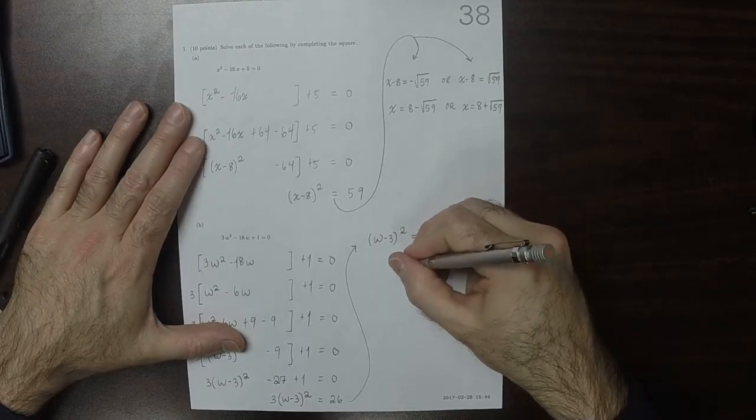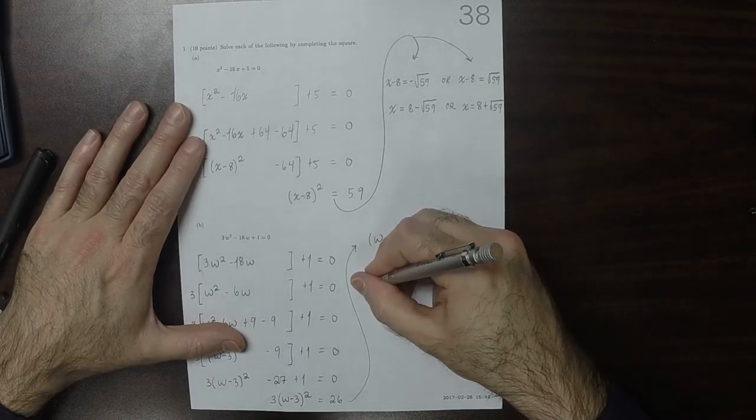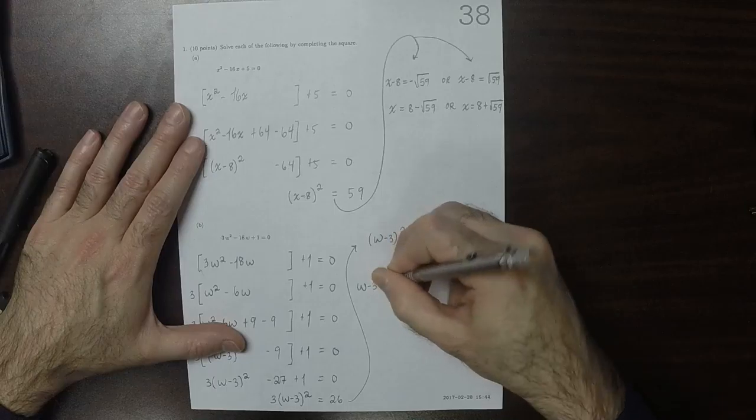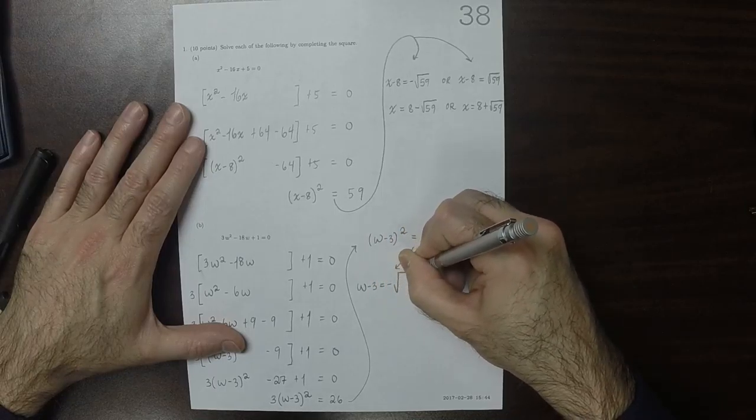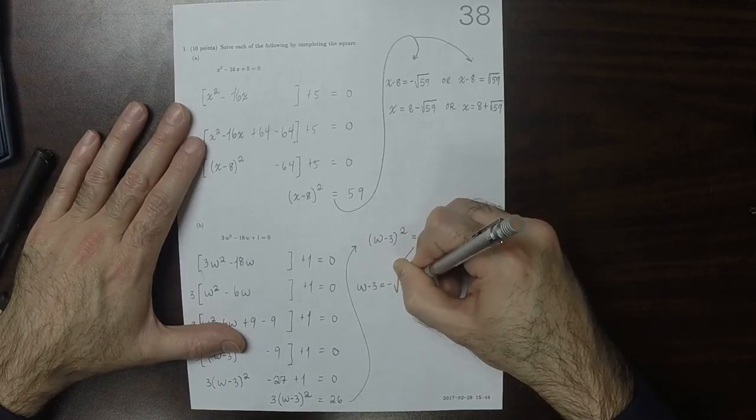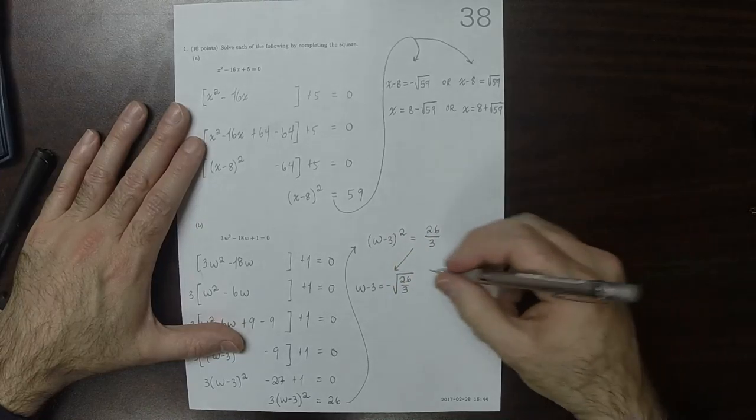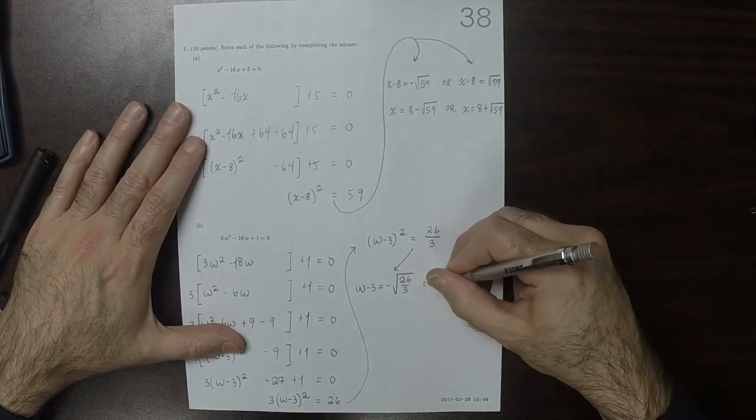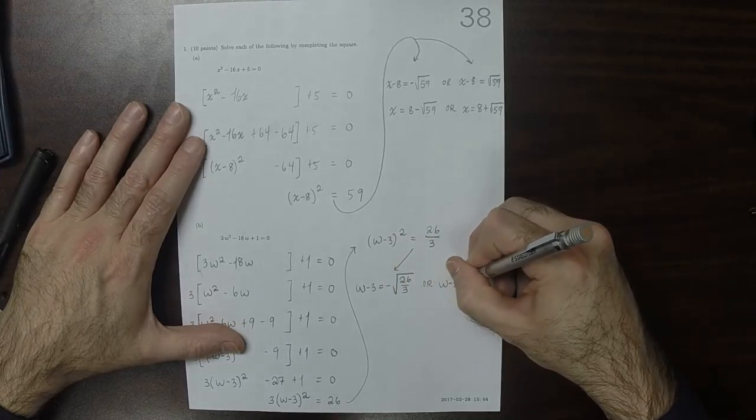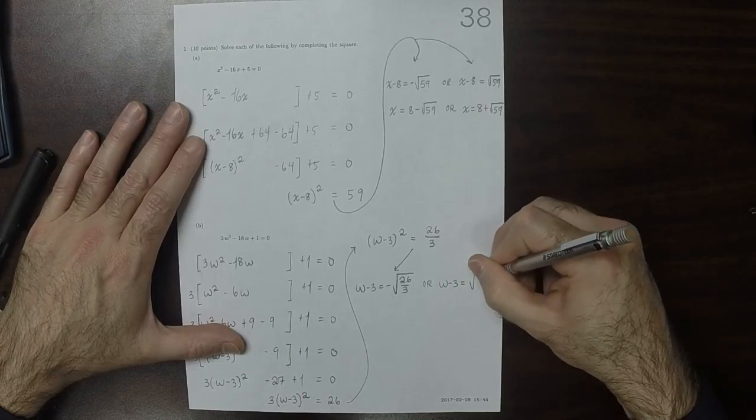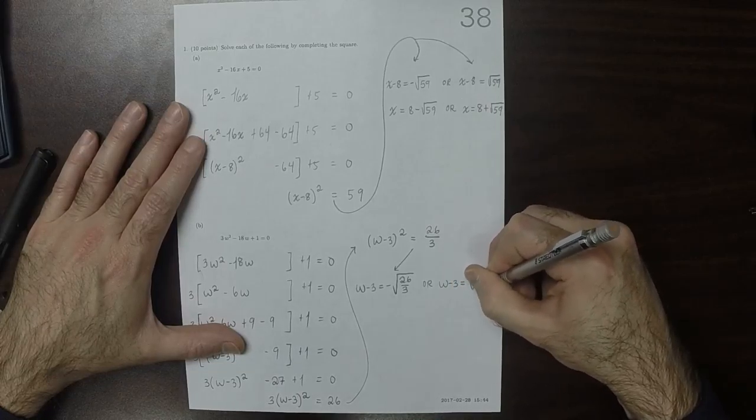So this splits into 2. One of the possibilities is that w minus 3 is negative square root 26 over 3. The other possibility is that w minus 3 is positive square root 26 over 3.